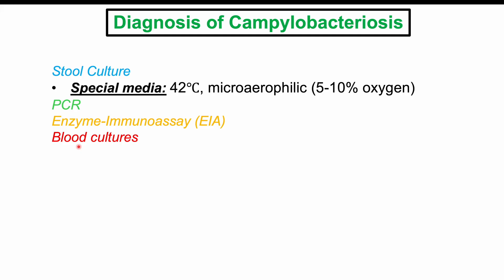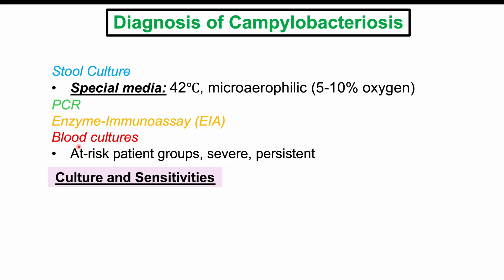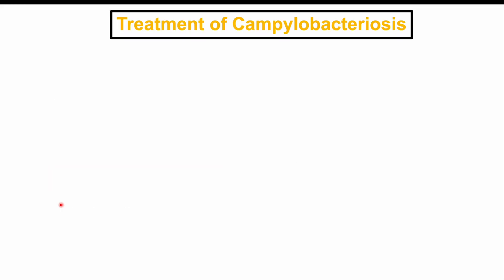Blood cultures can be performed in those suspected of having bacteremia — in at-risk patient groups or those with a more severe or prolonged clinical presentation. Culture and sensitivities on the bacteria are important. CSF analysis can be important to assess for meningitis, with findings including low glucose, high protein, and high opening pressure.